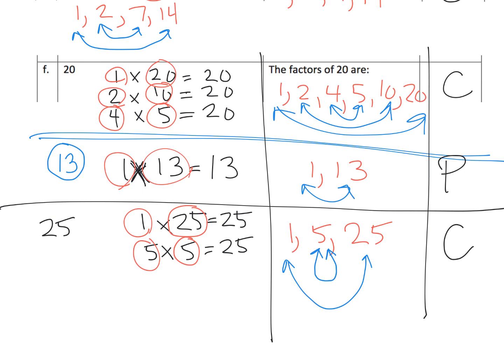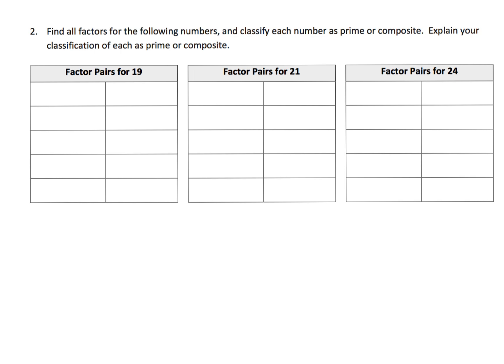If students need color tiles to build rectangles, give them to them. For twenty-one, the factor pairs are: one times twenty-one, and three times seven equals twenty-one. Two times ten is twenty so that doesn't work, and four times five is twenty so that doesn't work either. We found them all. Is twenty-one prime or composite? It's composite, because it has two entries rather than just one. By contrast, nineteen — the only way to make it is one times nineteen — which makes it prime.